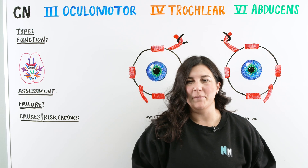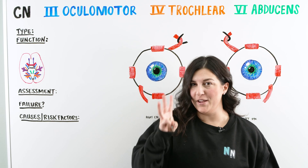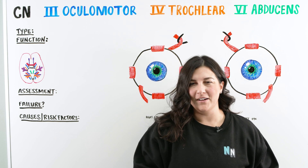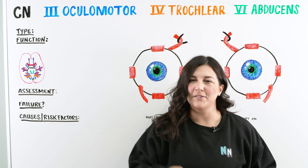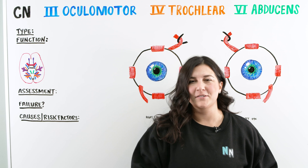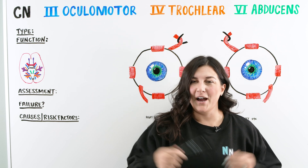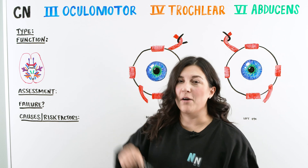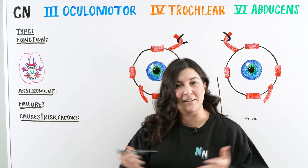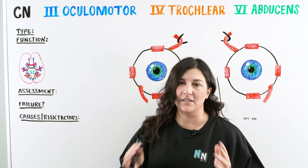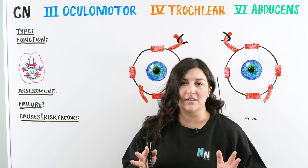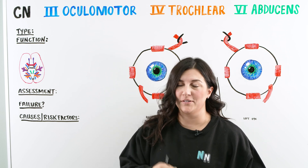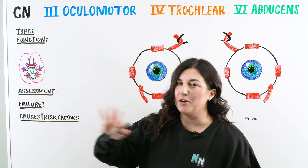Hi, Ninja Nerds. In this video today, we're going to be talking about three cranial nerves. But before we get started, make sure you go to NinjaNerd.org, check out all of our notes and illustrations. And if you do like this video, comment down below, subscribe, and leave a thumbs up. As we go through our cranial nerve videos today, we're going to be talking about three that work with the eyes in tandem, and we're going to be able to do all three assessments together. So that's why they're grouped together.